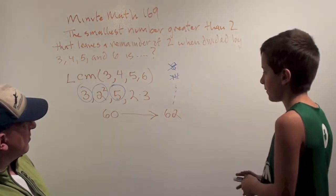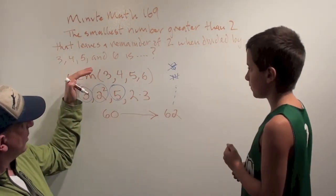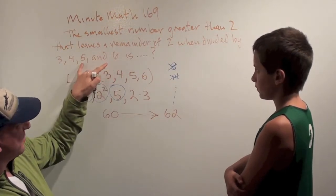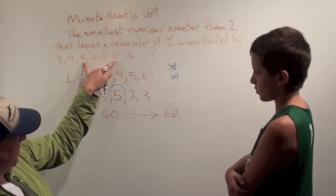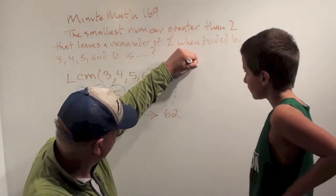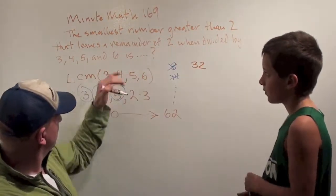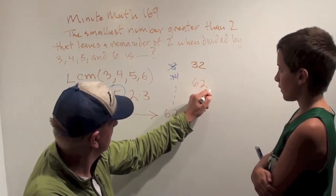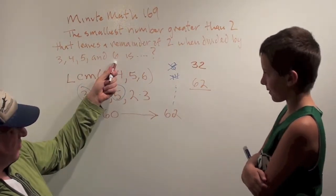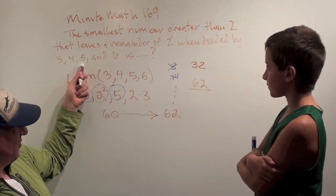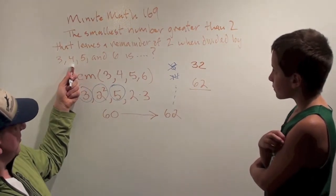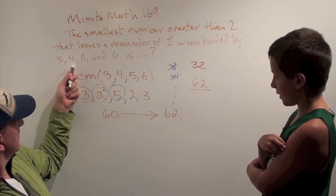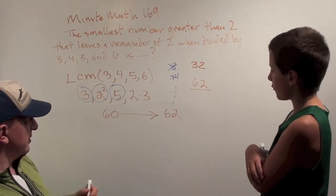If you didn't remember the least common multiple, one way to make this just a little bit faster would be to do 2 more than a multiple of 6 and a multiple of 5. So that would be 30, right? Mm-hmm.